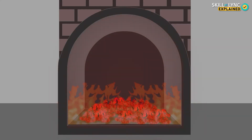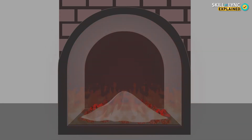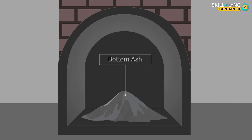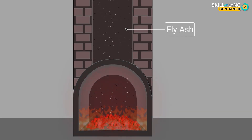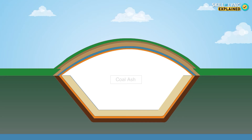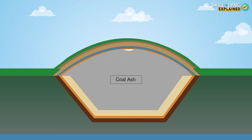Aside from gaseous forms of waste, coal power plants also produce solid forms of waste called coal ash. Once the organic compounds in the fuel are burnt, the leftover inorganic compounds get left behind at the bottom of the chamber. This is called bottom ash. Some of this ash gets mixed with the gases and this is called fly ash. Fly ash can easily be separated from the gas by filtering it out. The coal ash is filtered out and stored in landfills to prevent it from getting released into the atmosphere and causing health problems.